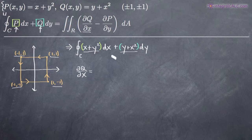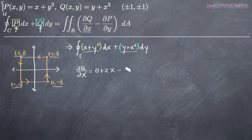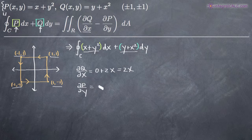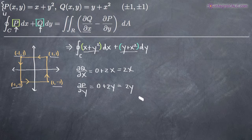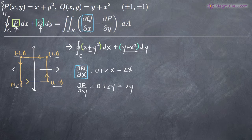In this case, Q(x,y) equals y plus x squared. So to find the partial derivative with respect to x, we'll get 0 plus 2x, which of course gives us 2x. Now we'll find the partial derivative of P with respect to y — that gives us 2y. We'll be plugging the partial of Q w.r.t. x and the partial of P w.r.t. y into our double integral.